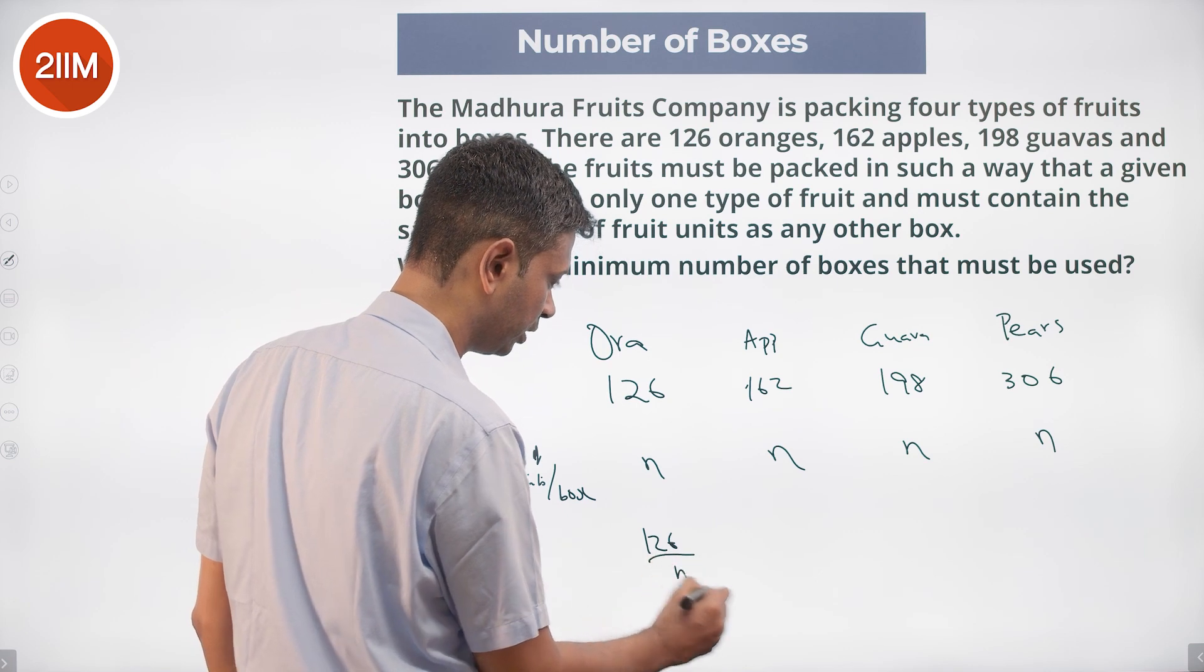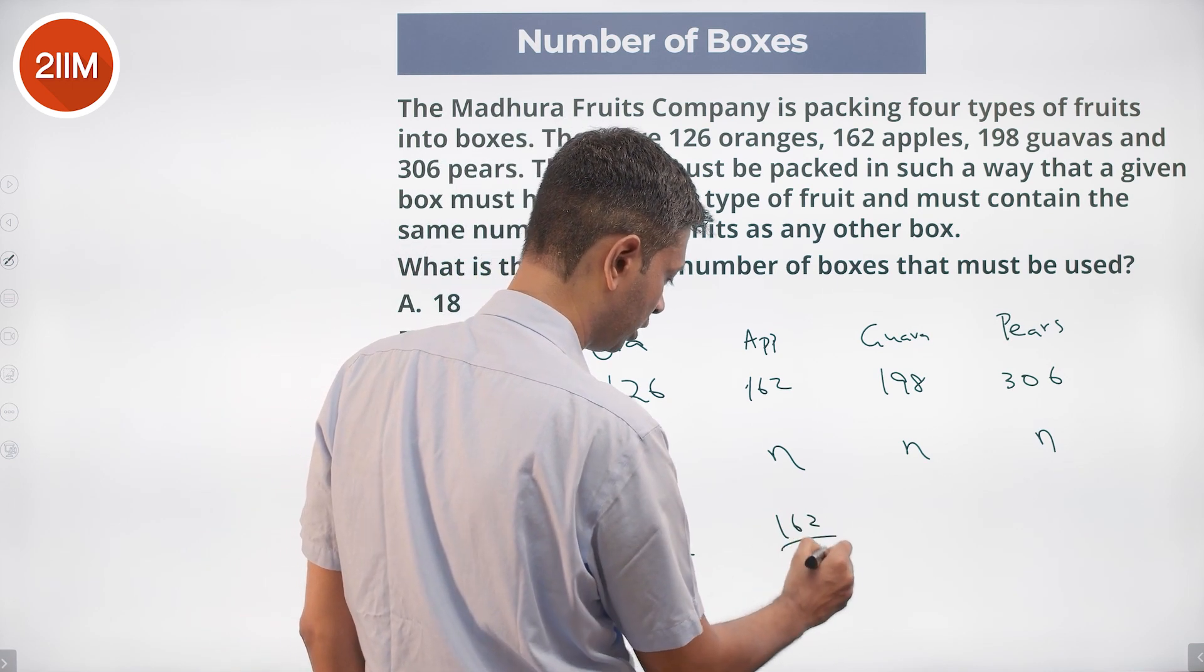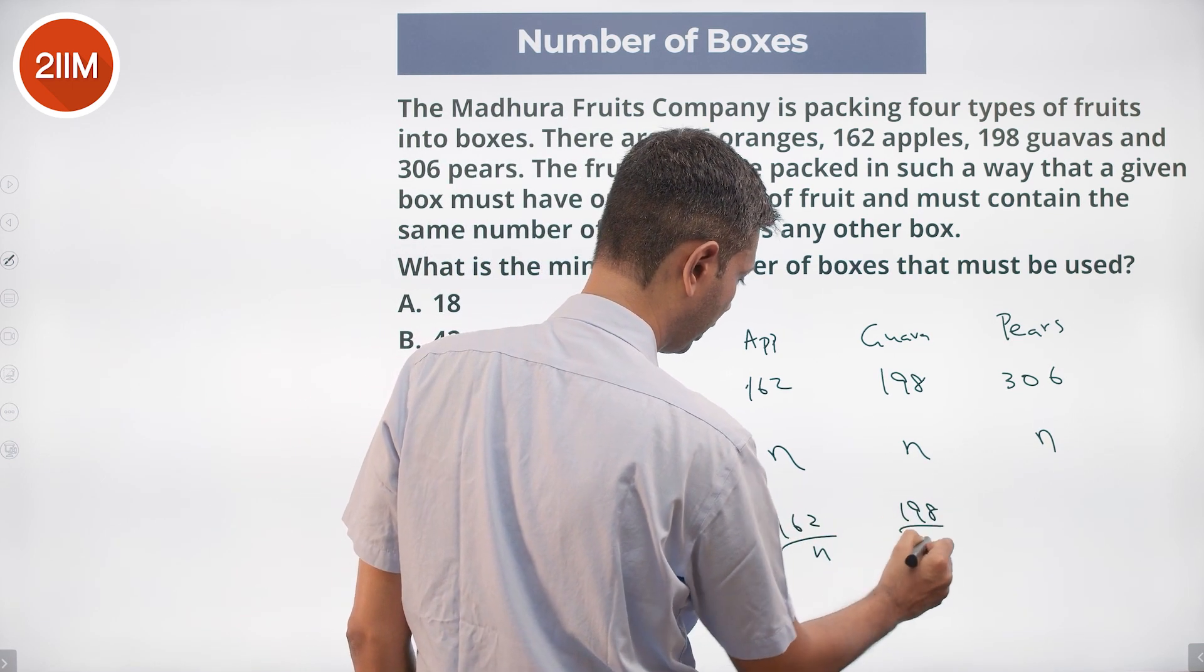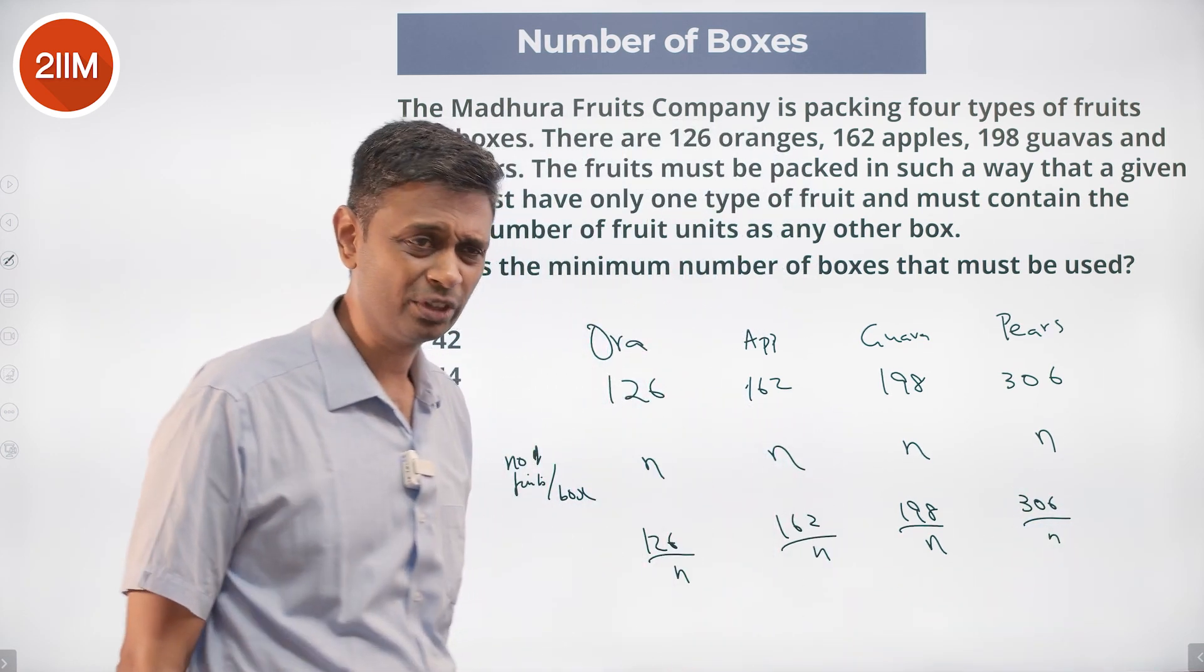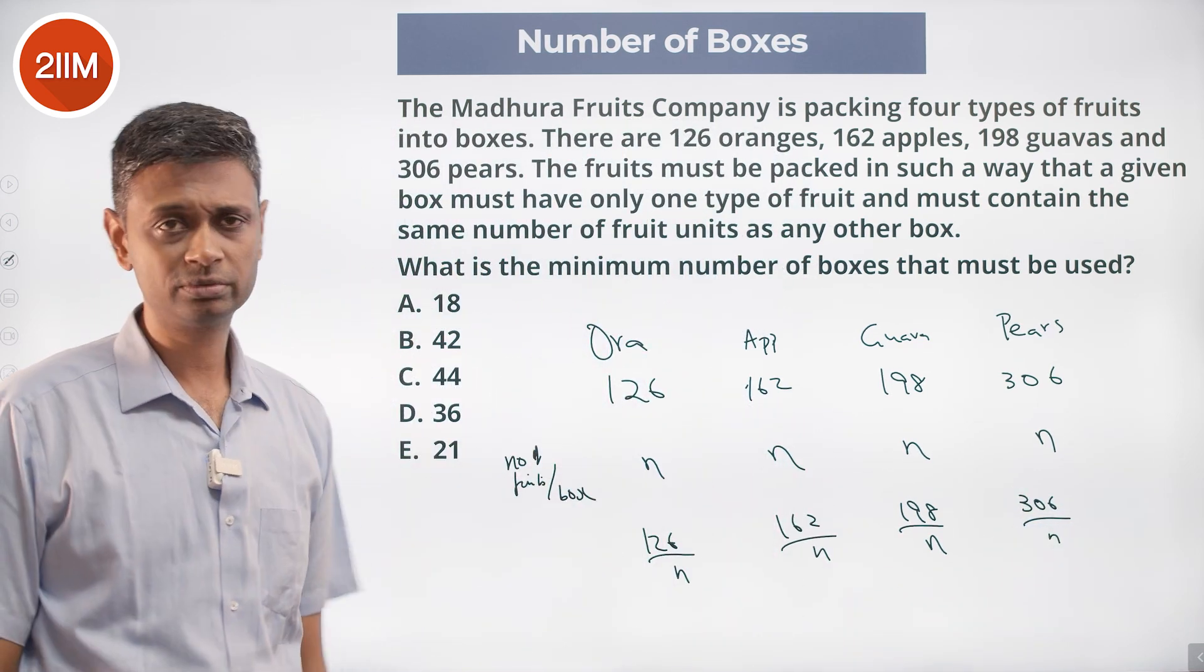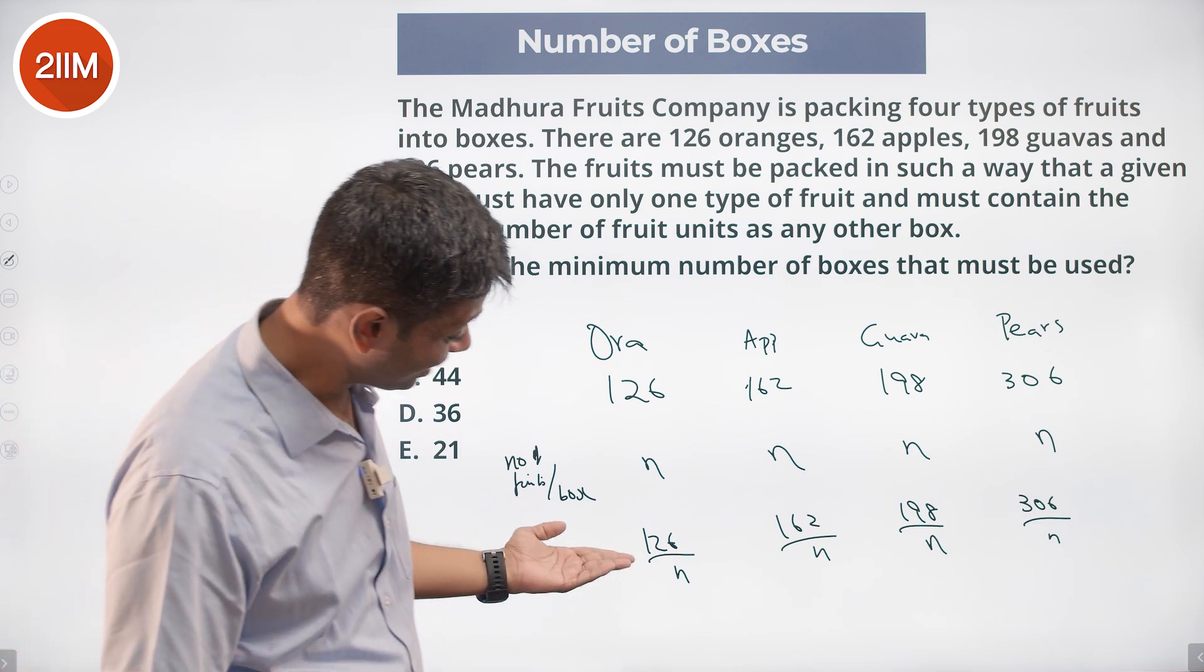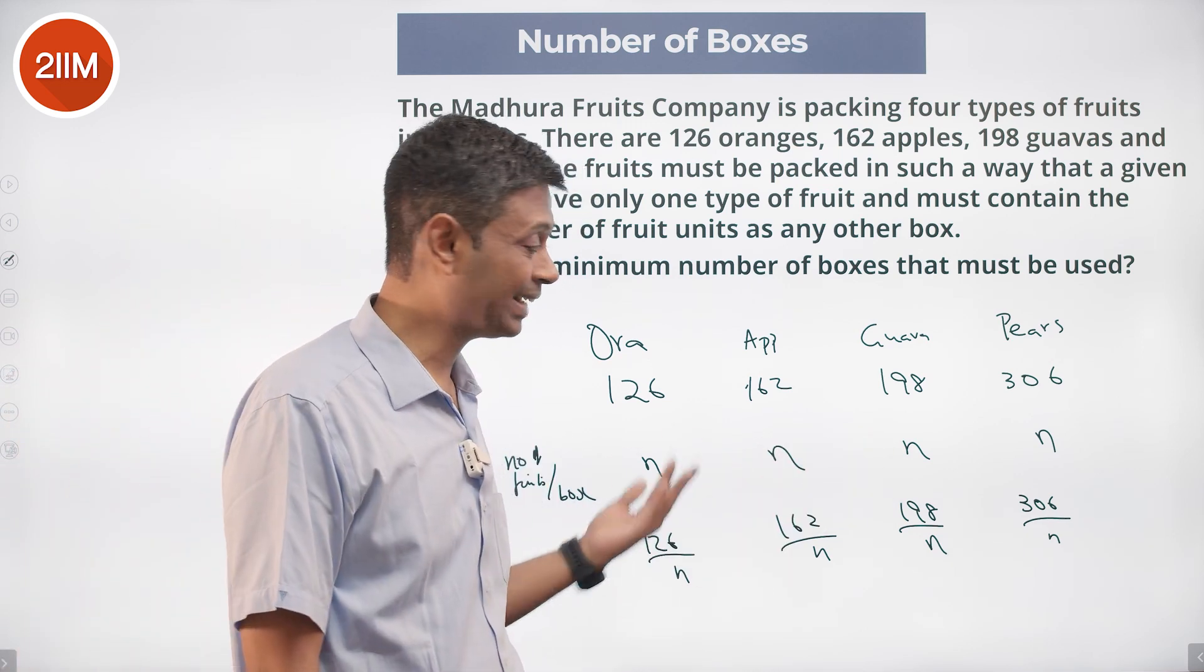The number of boxes is 126 by N, 162 by N, 198 by N, and 306 by N. All of these should be integers, so N should be a factor of each of these numbers. To minimize the number of boxes, N should be as high as possible.